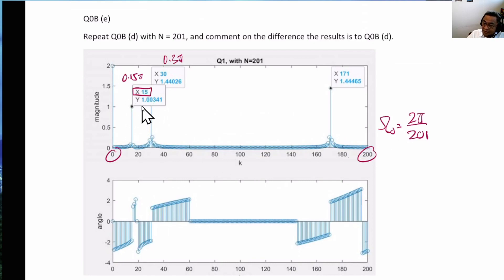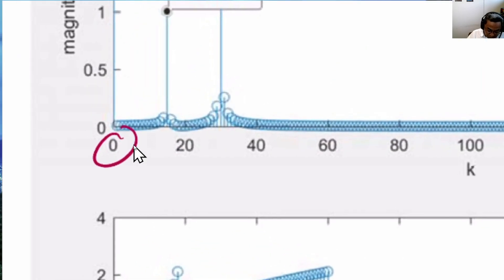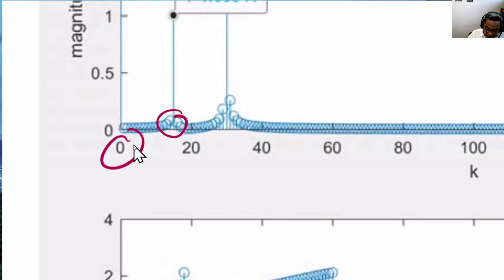And in this particular case, since it does not land exactly, the energy representing this exponential here has to be distributed to its neighbor. So you can see that the neighboring terms are not zero now.